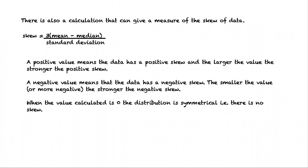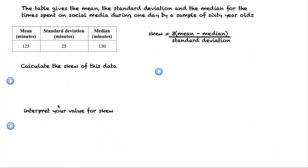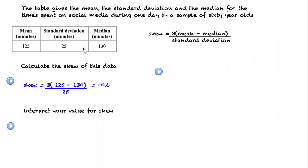Let's see how we can use that calculation. The table gives the mean, the standard deviation, and the median for the times spent on social media during one day for a sample of 60-year-olds. It shows us that the mean is 125 minutes, the standard deviation is 25 minutes, and the median is 130 minutes. We're asked to calculate the skew for this data. Remembering the formula: skew is three times the mean, 125, minus the median, 130, divided by the standard deviation, 25. And this gives a value of minus 0.6.